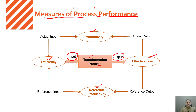One is the efficiency of the process, another is the effectiveness of the process, and the third is productivity. In order to improve productivity, we want it to be as high as possible. Let's discuss how productivity is linked with effectiveness and efficiency.